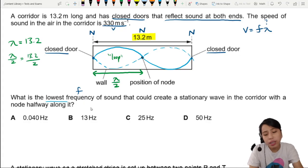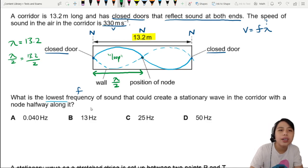Okay, find the answer. Lambda over 2 is 13. Then we can calculate: 330 equals frequency times 13.2.